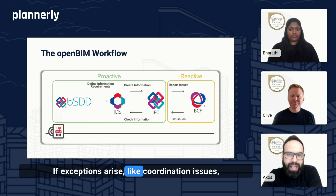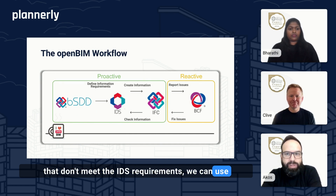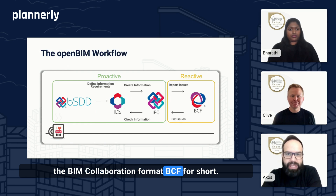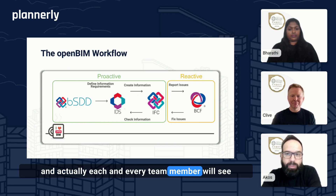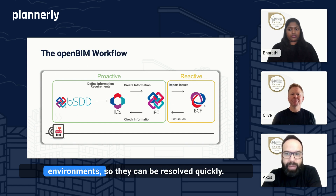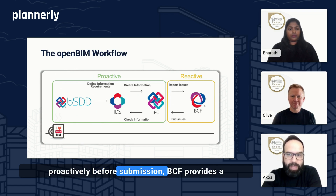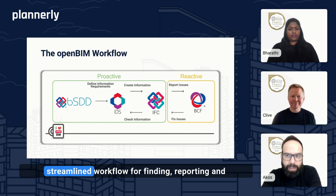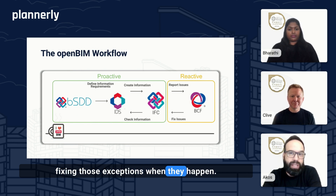If exceptions arise, like coordination issues, clashes, or deliverables that don't meet the IDS requirements, we can use the BIM Collaboration Format, BCF for short. BCF helps us to report issues and communicate them, and each team member will see the issues in the same way in their native environment so they can be resolved quickly. While we prefer to fix everything proactively before submission, BCF provides a streamlined workflow for finding, reporting, and fixing those exceptions when they happen.